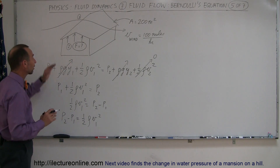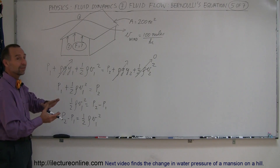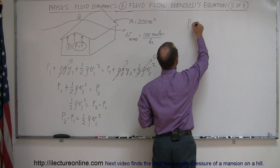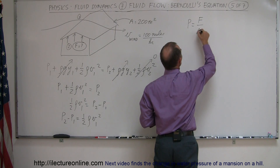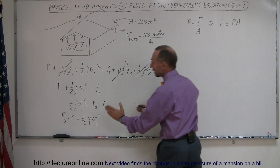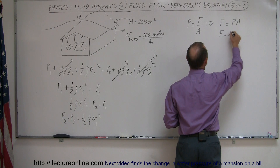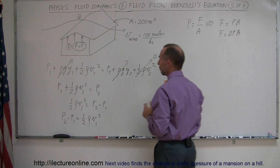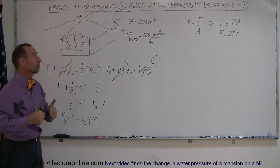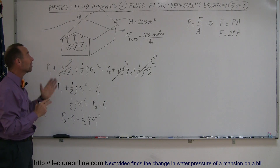The force the roof experiences results from the pressure difference between outside and inside. Since pressure equals force divided by area, force equals the pressure difference times area. If the pressure inside is greater than the pressure outside, the force is directed against the roof from the inside out, trying to blow the roof off — which is basically what happens in hurricanes.